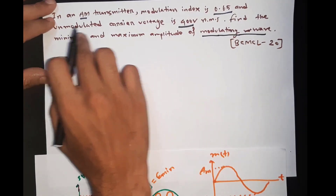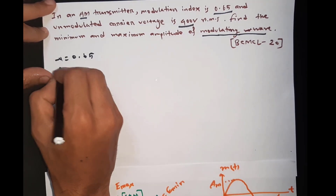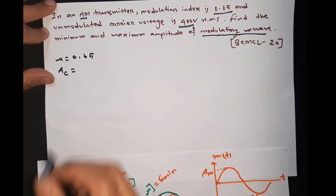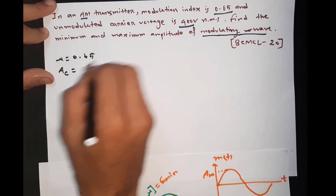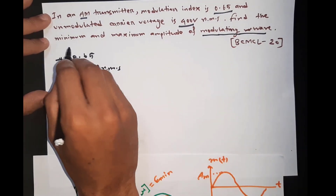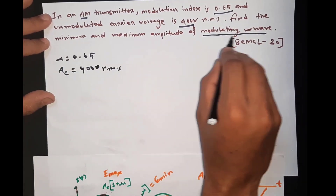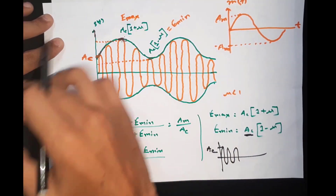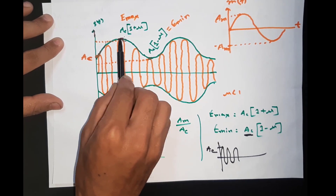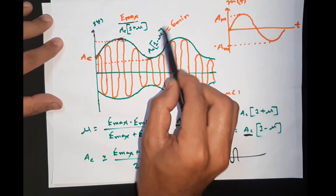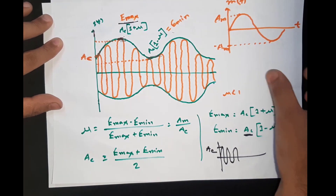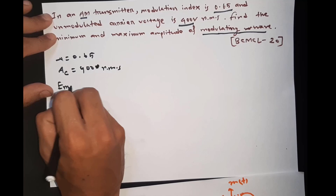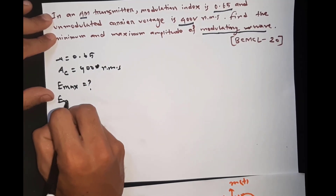This is the unmodulated carrier voltage. This is the carrier signal amplitude, which becomes modulated. This is the unmodulated carrier voltage — simple. Now, we need to find the minimum and maximum amplitude of the modulating wave. This is the modulated wave. This is the maximum amplitude and this is the minimum amplitude. So, the maximum and the minimum values are what we need to determine.